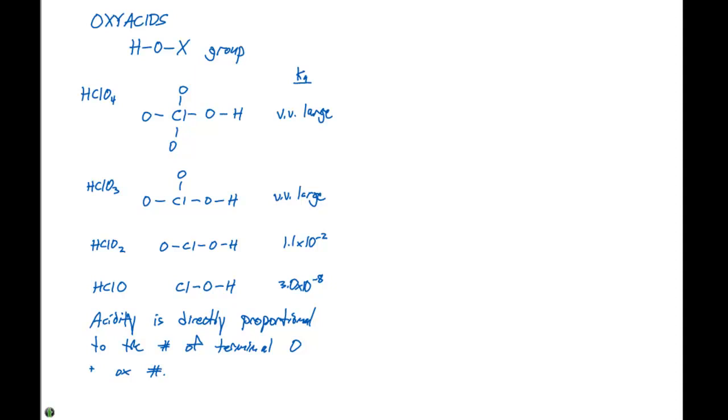So if we look at the oxidation number of each of these chlorines in each of these acids, we have plus 7 for HClO4, plus 5 for HClO3, plus 3 for HClO2, and plus 1 for HClO.